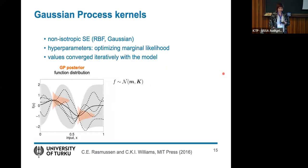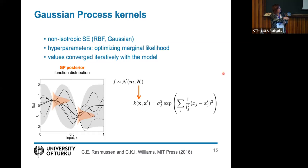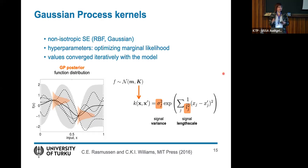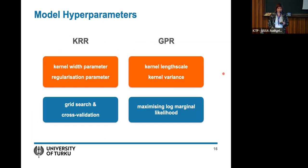The kernel connects any two points x and x-prime via a covariance function. A classic Gaussian kernel — also called the squared exponential or radial basis function kernel — has a signal variance multiplying the Gaussian and a length scale in the denominator of the exponent. These parameters must be fitted: for kernel ridge you use grid search, but for GPR they are fitted automatically by maximizing the log marginal likelihood.